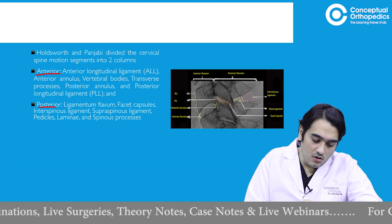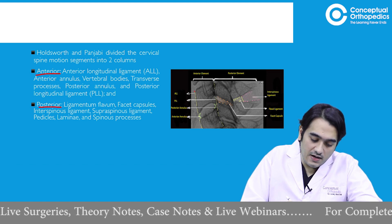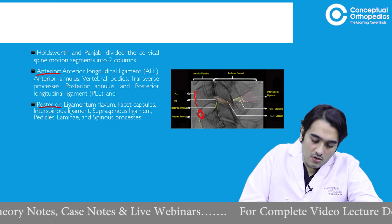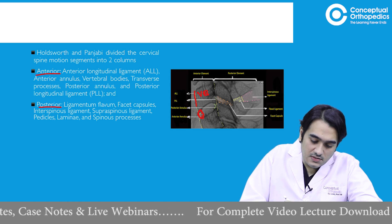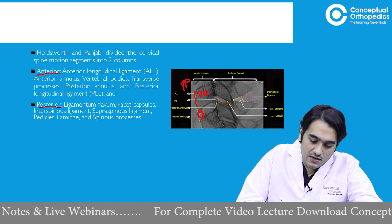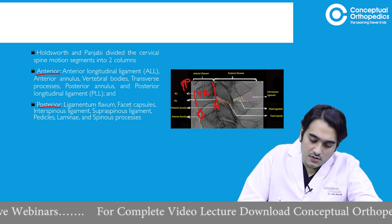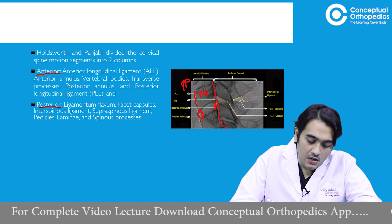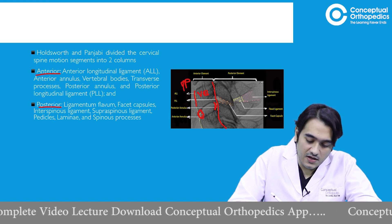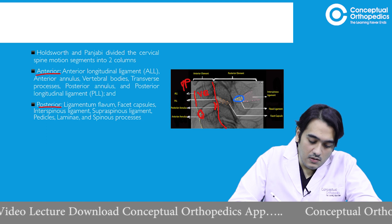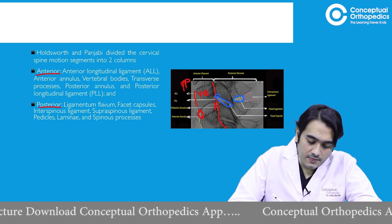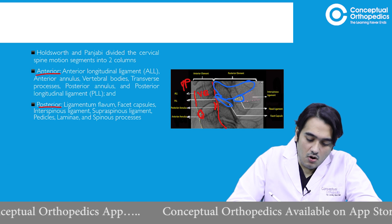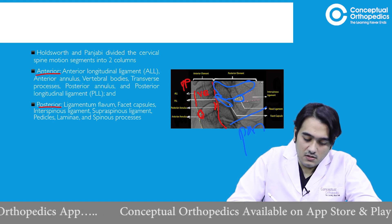The anterior column comprised the anterior longitudinal ligament, the anterior part of the annulus, the vertebral bodies, the transverse processes, the posterior annulus, and the posterior longitudinal ligament. The posterior column consists of the ligamentum flavum, the facet capsules, the pedicles, the lamina, and the spinous process. All these structures form the posterior column.